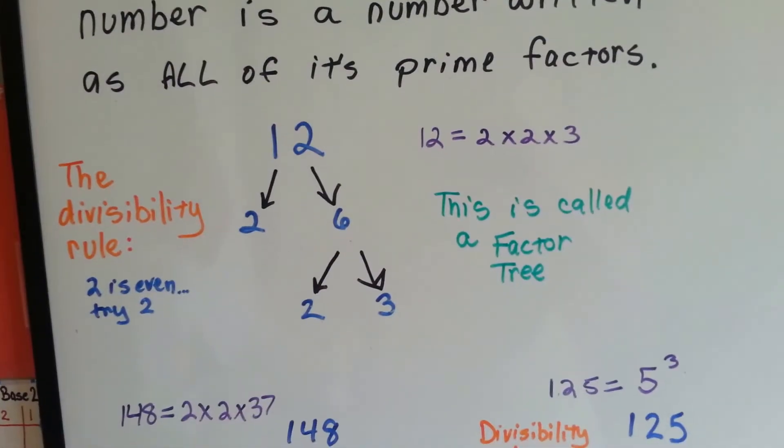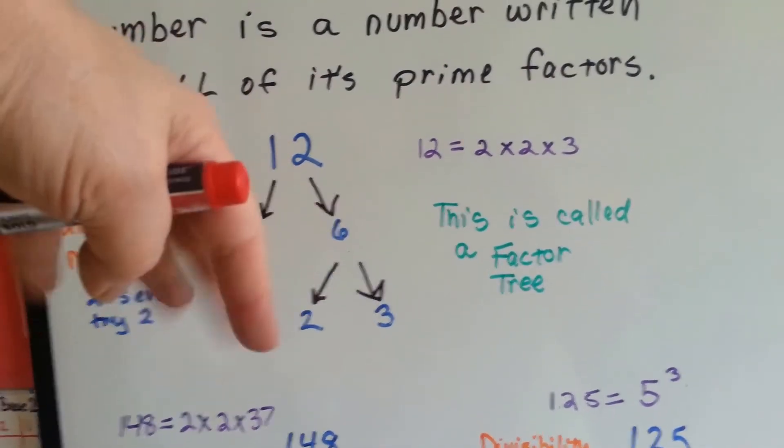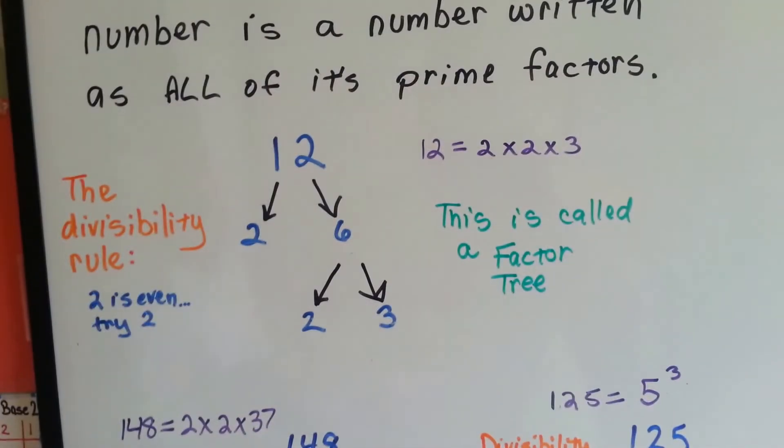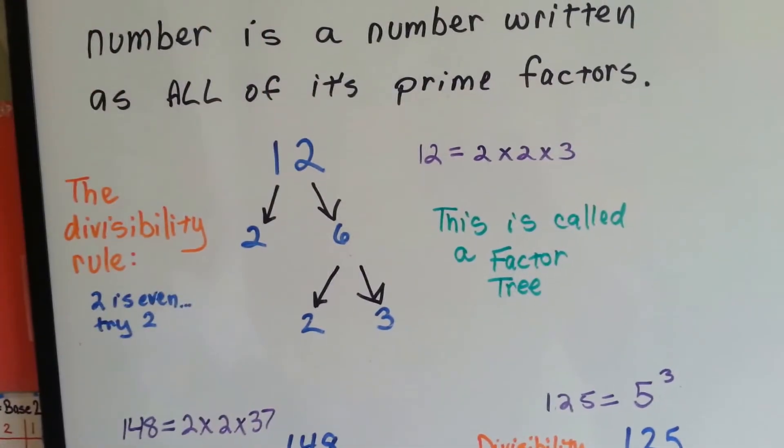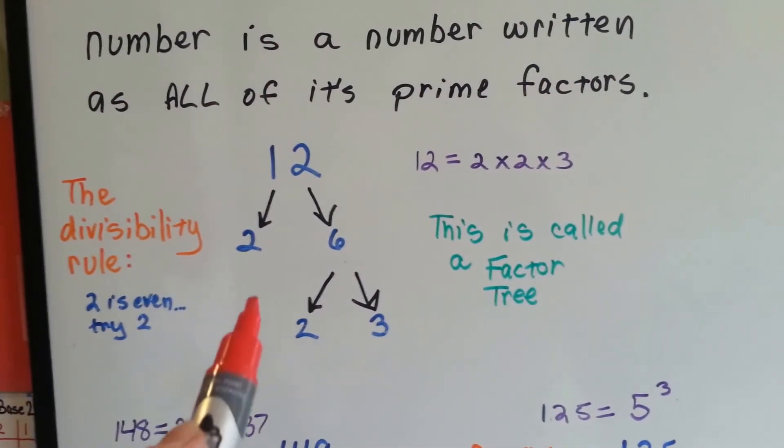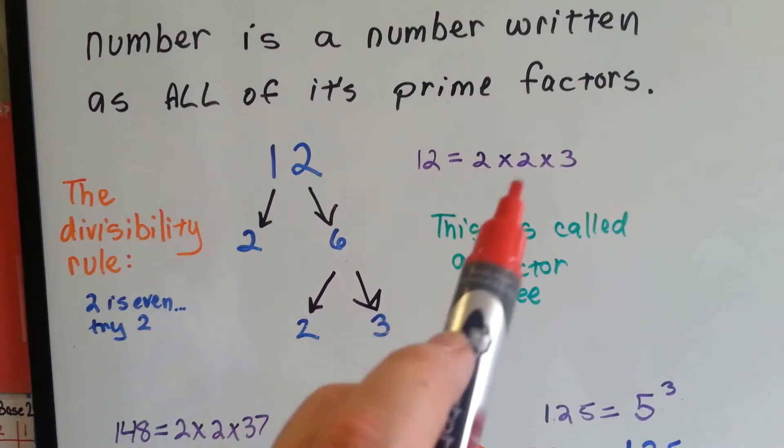This is called a factor tree. I kind of think of it more as factor roots because it's going down into the ground. Tree is supposed to go up, isn't it? So the prime factorization for 12 is 2 times 2 times 3.